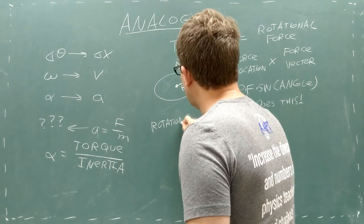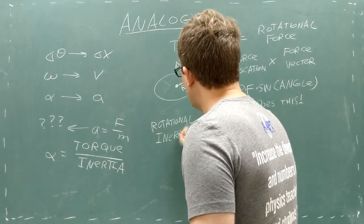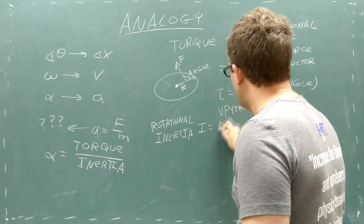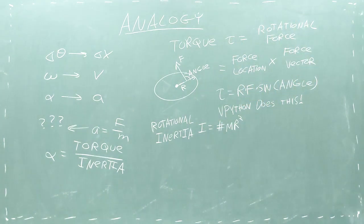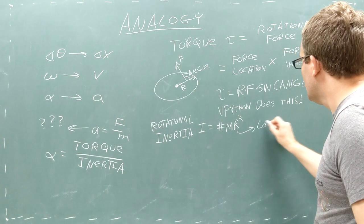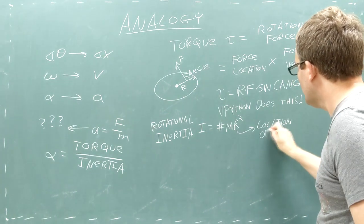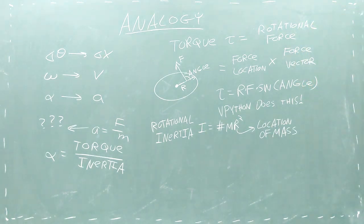Meanwhile, rotational inertia is the rotational equivalent of mass in that it tells you how difficult it is to accelerate the shape's motion. Rotational inertia is an interesting quantity because it depends both on how much mass a shape has and where that mass is located.